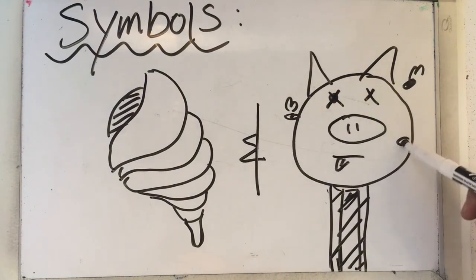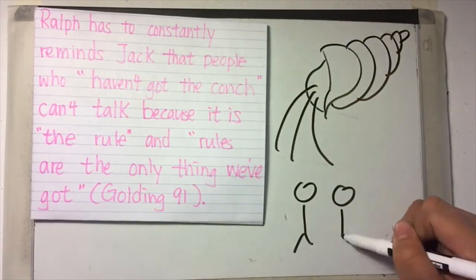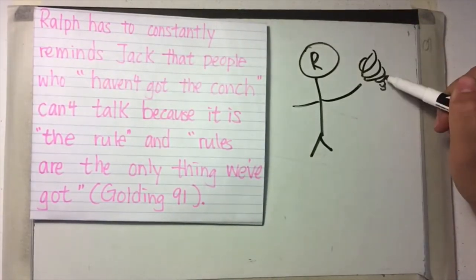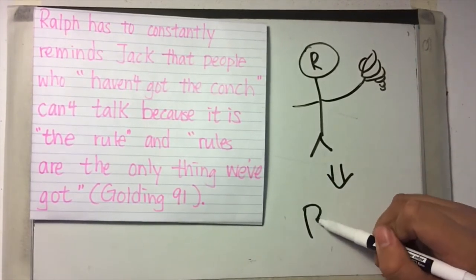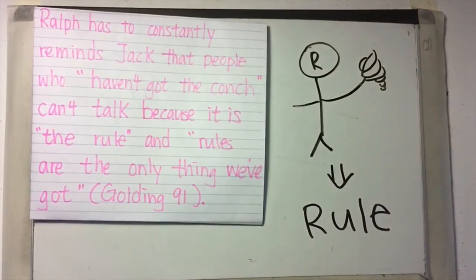The two main symbols are the conch shell and the beast. In the book, the existence of the conch represents civilization and orders. Ralph has to constantly remind Jack and the others that people who haven't got the conch can't talk because it's the rule, and rules are the only thing we've, the boys, got.